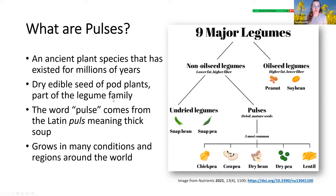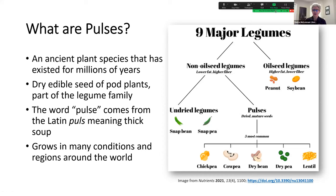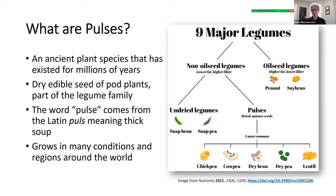Now turning to what are pulses — usually the question I get is 'pulse, I've never heard that before.' Pulses are the dry edible seed of pod plants. It's an ancient plant species that has been around for millions of years. The word pulse comes from the Latin word 'pulse,' meaning thick soup. There are different types of pulses that can grow in many conditions and regions around the world.